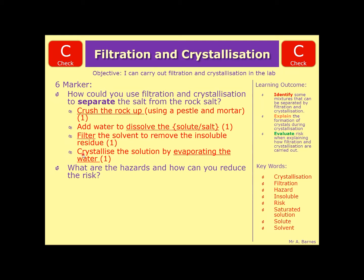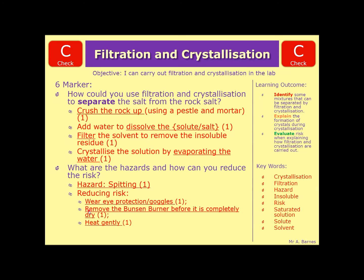So that will be four out of six. Now there are a couple of ways that you can get the final two marks in this six marker, which are looking at the hazards and how you can reduce that risk. First of all, obviously as I've gone through in the video, the major risk is that you get spitting which can cause burns. And then there are three ways that you can reduce the risk. Number one is wear eye protection to protect the eyes or goggles. Number two, remove the Bunsen burner before it's completely dry. Again, that reduces the amount of spitting. And number three, heat it gently. Don't heat it too strongly, otherwise it will get spit out.